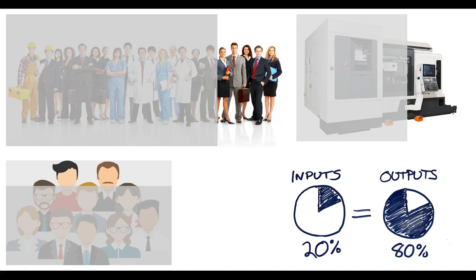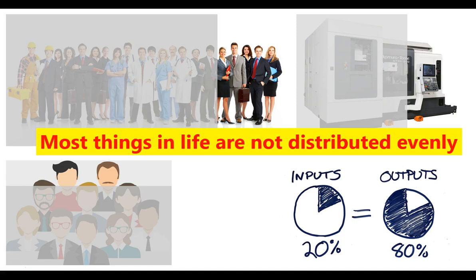20% of your inputs are responsible for 80% of your outputs; 20% of your efforts are going to get you 80% of your results. One reason I call this an observation is that it's not always exactly 80/20 — sometimes it'll be 90/10, sometimes 70/30. What it tells you is that the distribution is not going to be even. Most things in life are not distributed evenly. Going back to the garden example, if you plant several different vegetables this summer, you'll find you spend 80% of your time addressing 20% of the problems. The rest will thrive on their own, and your efforts will be very unevenly distributed.